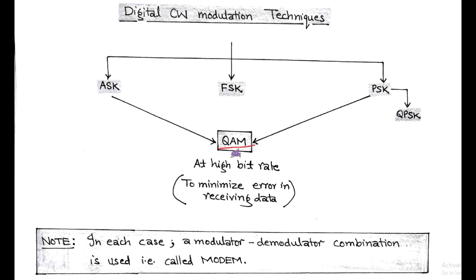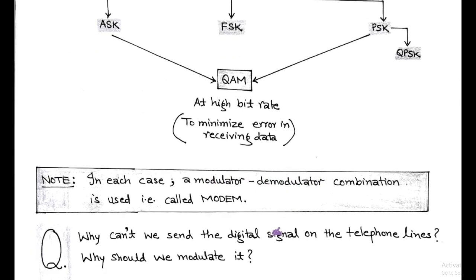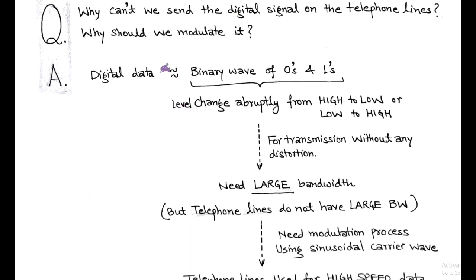This QAM scheme is suitable where a high bit rate is required in order to minimize the bit error in the received data. In all continuous wave digital modulation techniques, a modem is used as a device for the modulation and demodulation process. One question that arises is: why can't we send digital signals over telephone lines, or why should we modulate a digital signal before transmission over telephone lines?